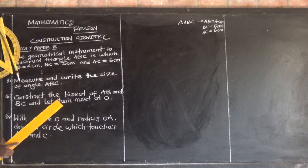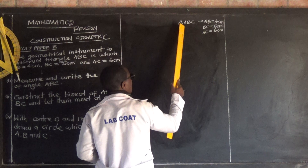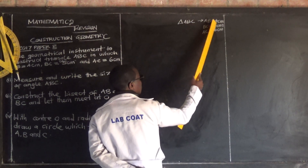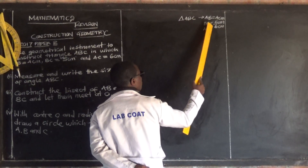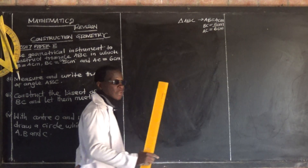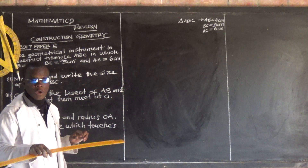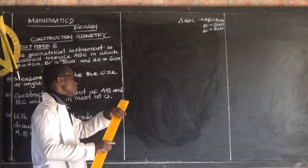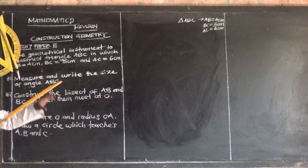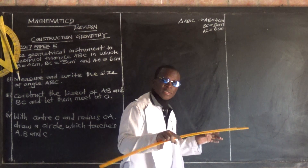They want us to come up with triangle ABC, in which AB equals 4 centimeters, BC equals 5 centimeters, and AC equals 6 centimeters. They are saying to use geometrical instruments — you should not use freehand, but use geometrical instruments.